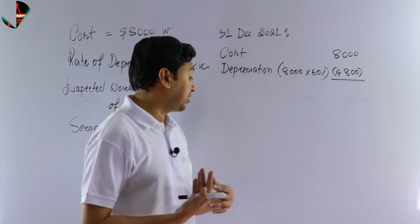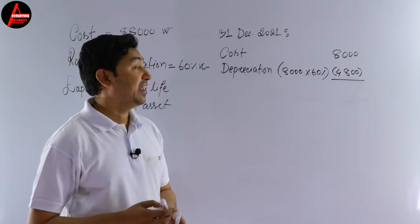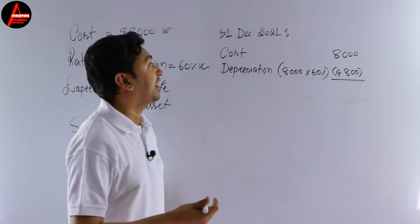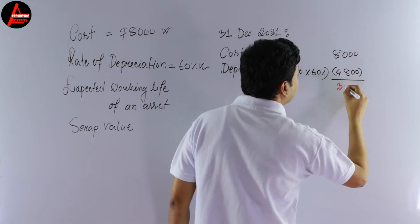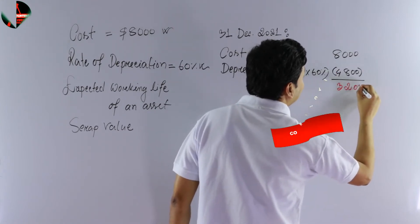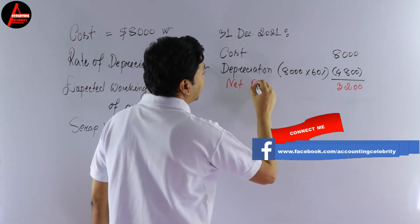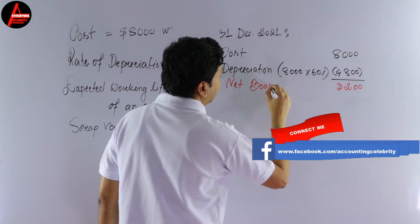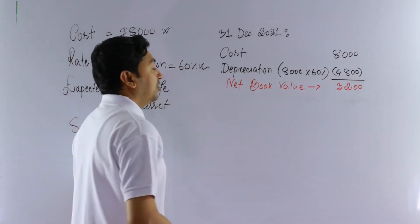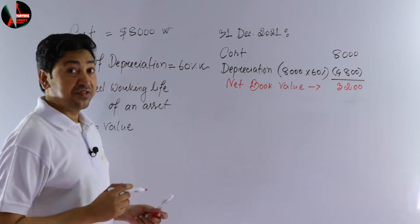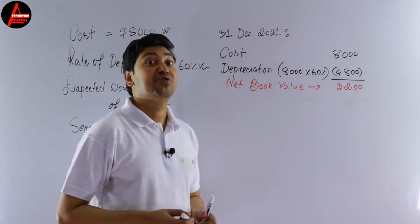If we subtract the depreciation from the cost of the asset we get the net book value. So $8,000 minus $4,800 gives us $3,200. This $3,200 is the net book value at 31st December 2021.